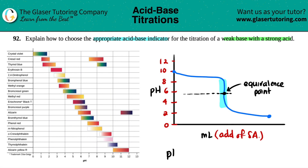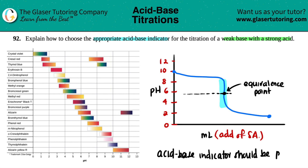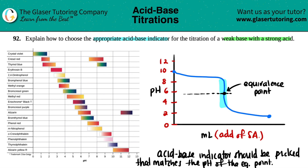The rule is: the acid-base indicator should be picked to match the pH of the equivalence point. In this case, we'd pick methyl red, since there's a color change — from orange to yellow — around that acidic equivalence point pH.